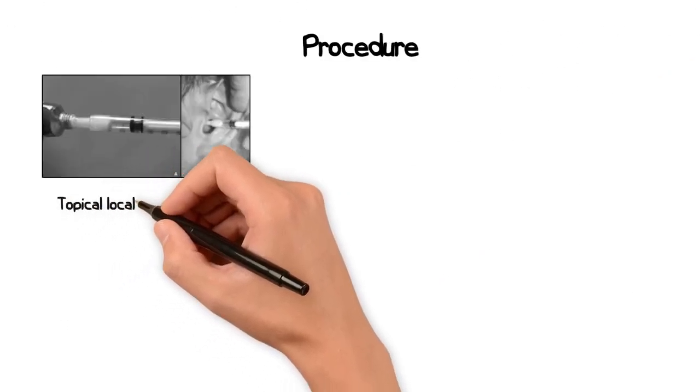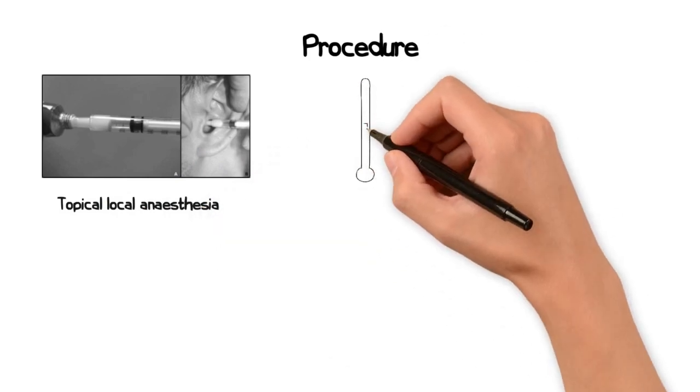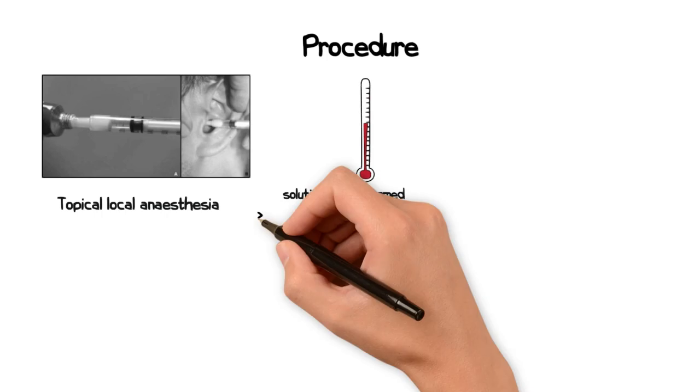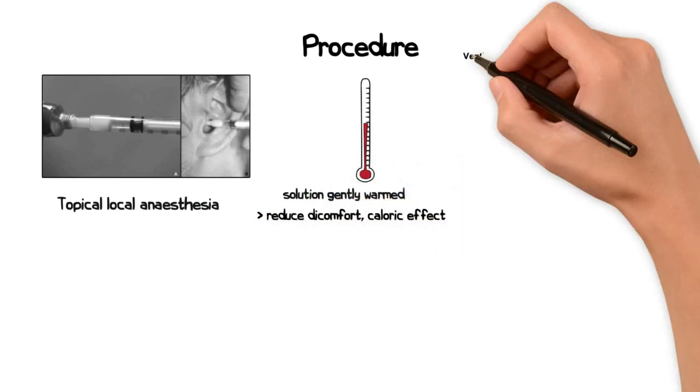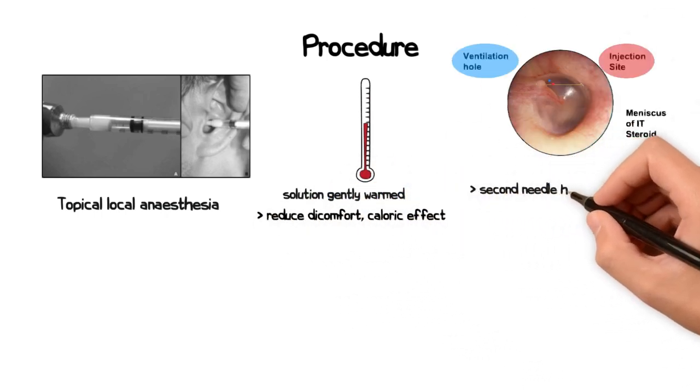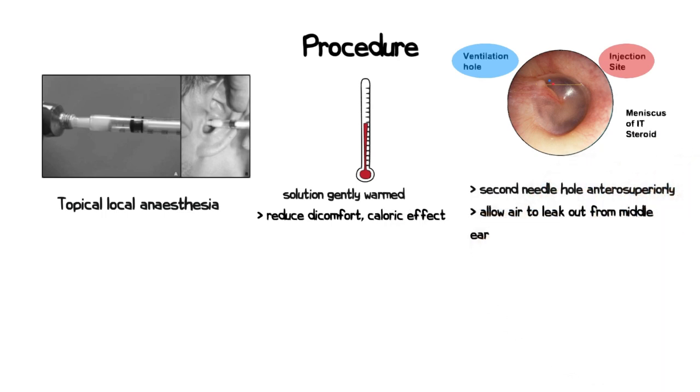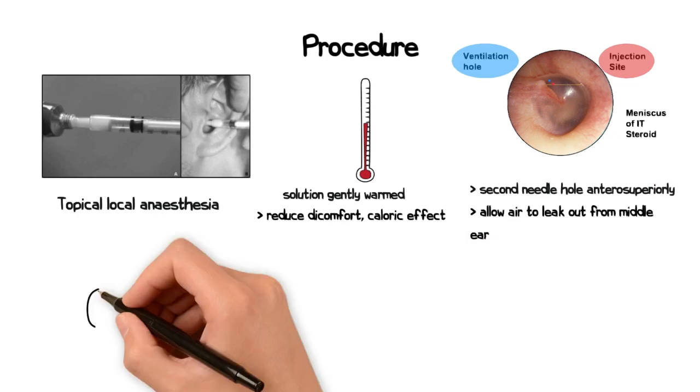The procedure is tolerated well under topical local anaesthesia, and to minimize any discomfort or caloric effect, it is helpful to gently warm the steroid prior to administration. In addition to the injection site, placing a separate needle hole anterosuperiorly allows for air to escape from the middle ear as the steroid is administered. This helps to reduce aural pressure symptoms.